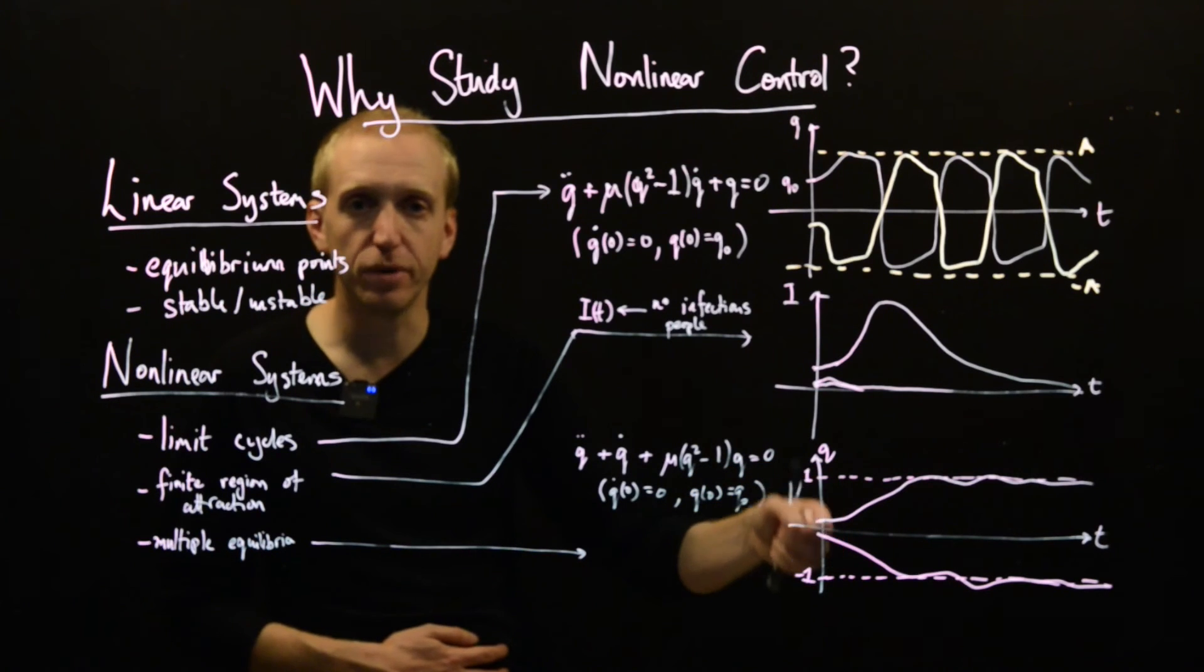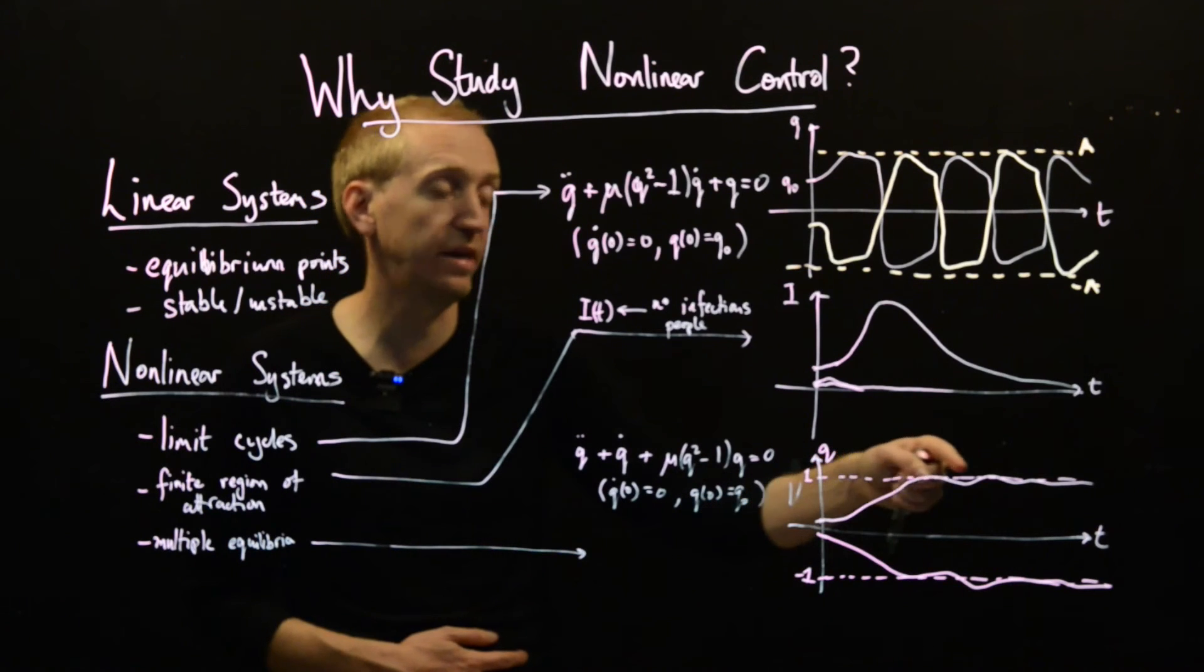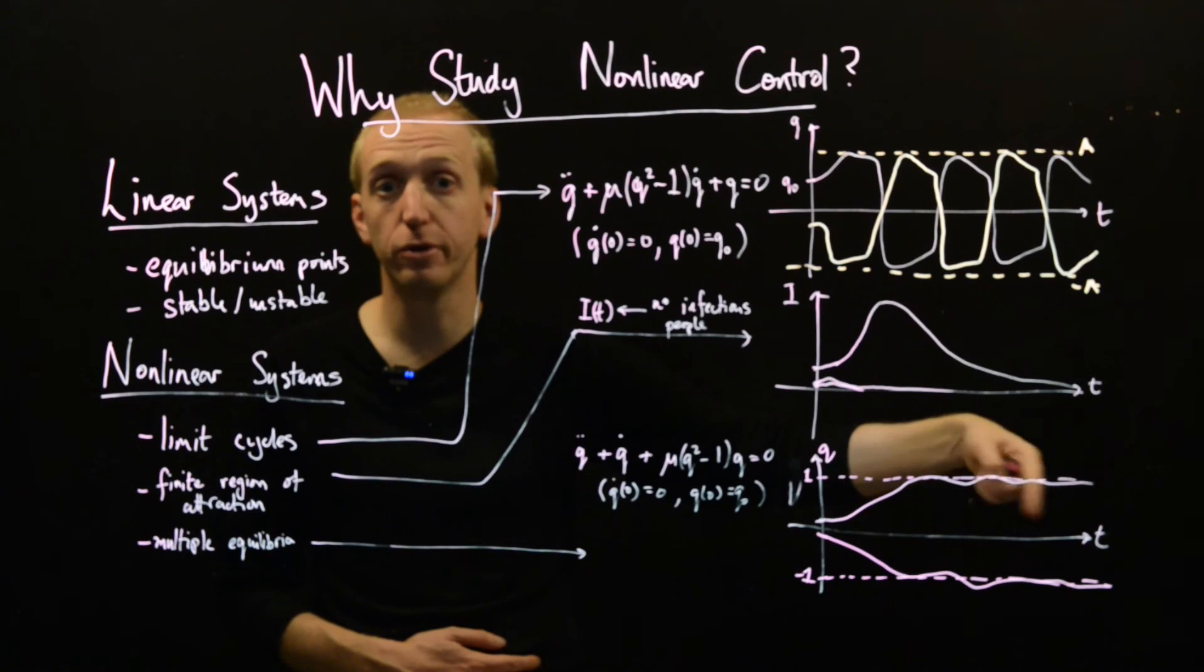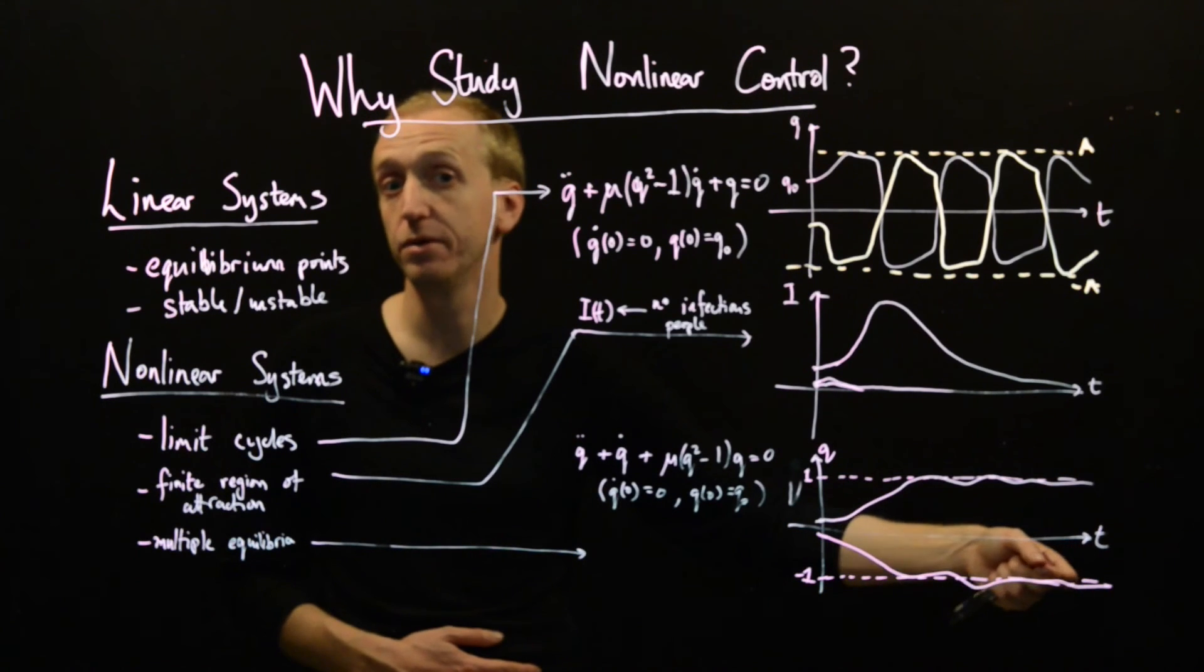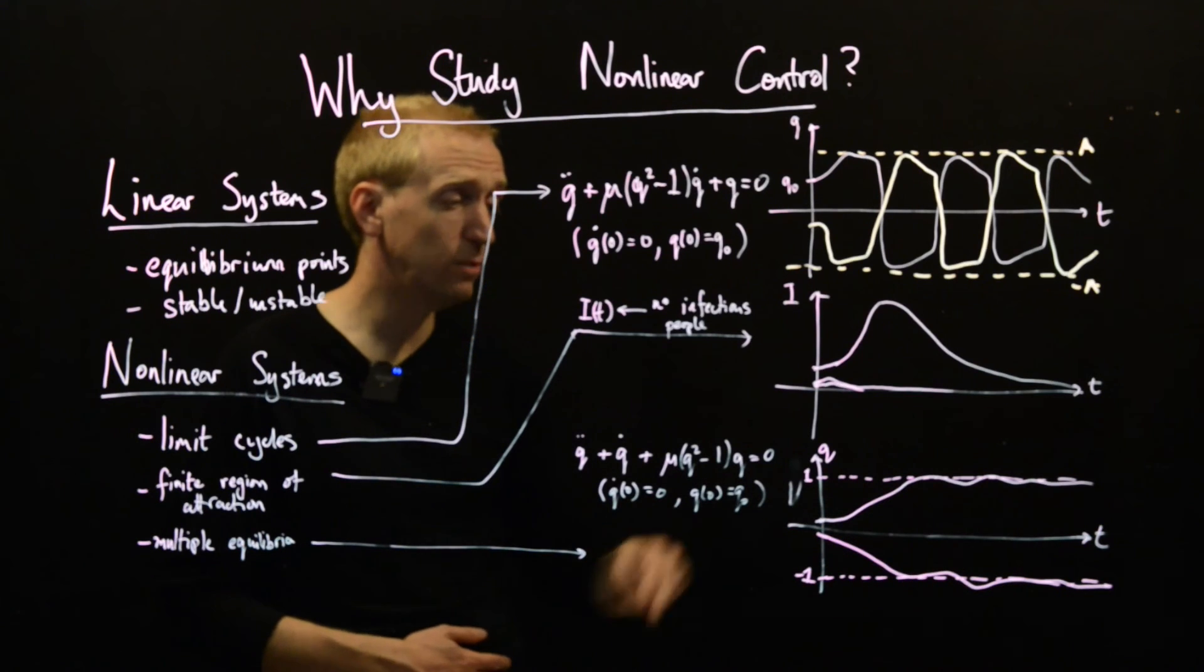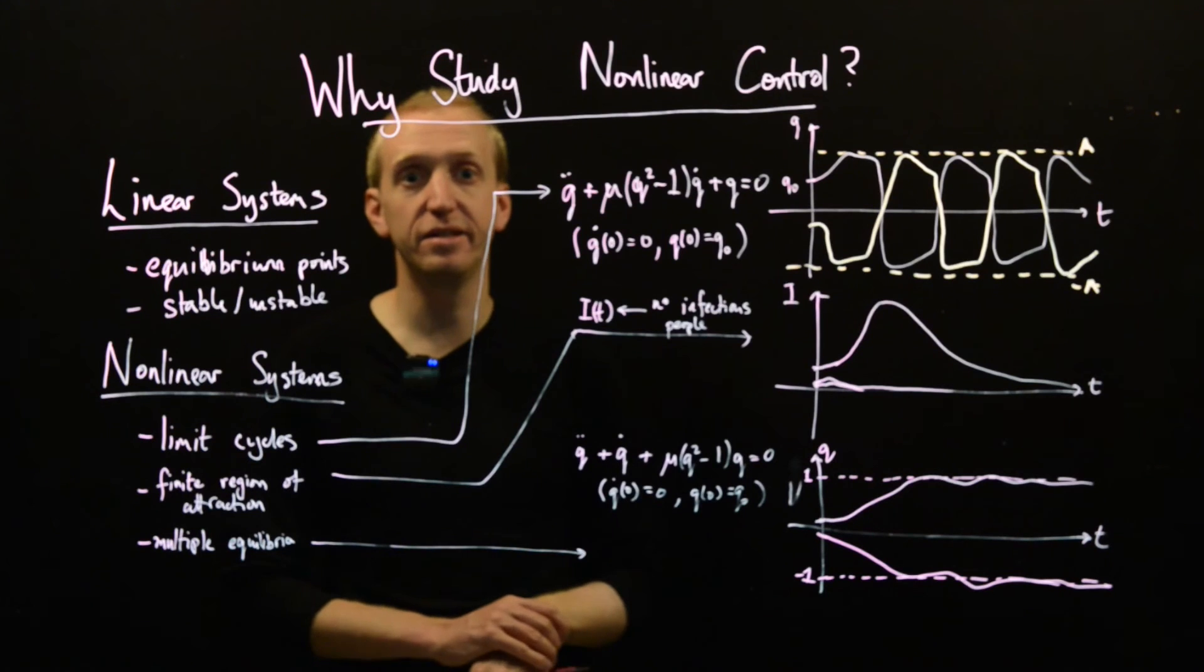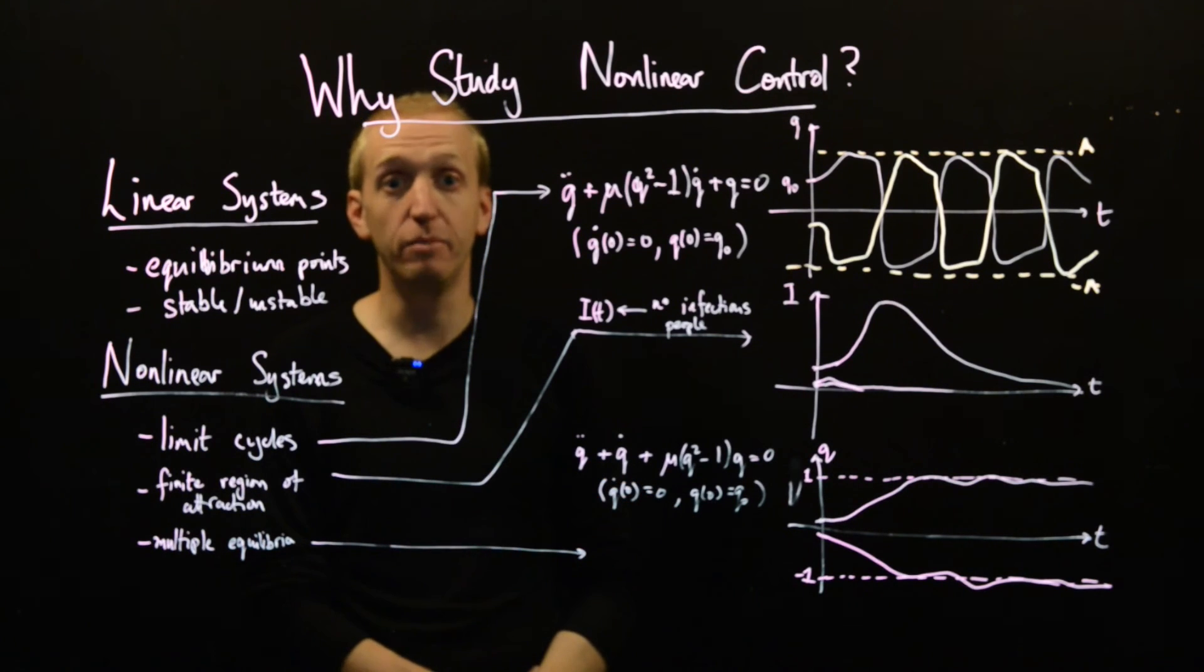So here, just by varying the initial condition or varying the input to your memory, you can force it to settle down to one equilibrium point, which might correspond to storing a 1. Or settle down to another equilibrium point, which would correspond to storing a 0. And once we're there, it will stay there until we provide another input to push us into the other equilibrium point when we want to change what our memory is storing.